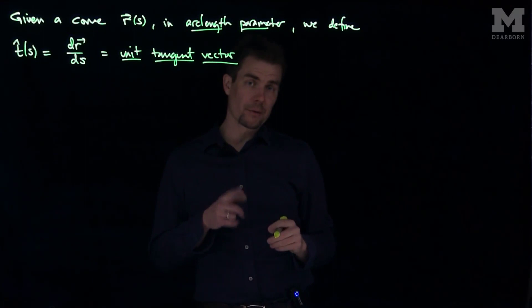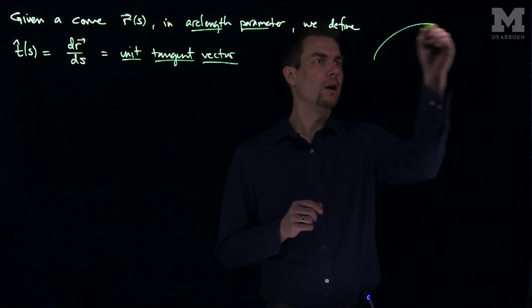That's the advantage of putting a curve into arc length parameter. When you compute the derivative of a curve in arc length parameter, you know it will automatically be a unit vector.